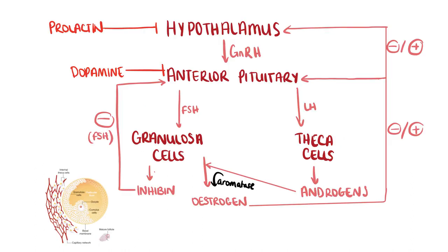To understand menopause, let's talk about the hypothalamic-pituitary-ovarian axis. The hypothalamus releases gonadotrophin-releasing hormone in a pulsatile fashion. This stimulates the anterior pituitary to release both follicle-stimulating hormone and luteinising hormone. Luteinising hormone, or LH, stimulates the theca cells of a follicle to produce androgens, which are converted to oestrogen by an enzyme called aromatase.